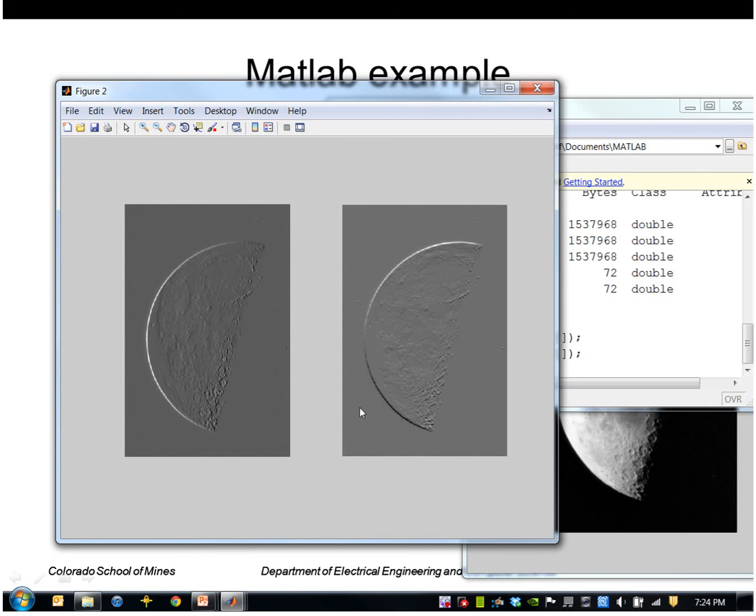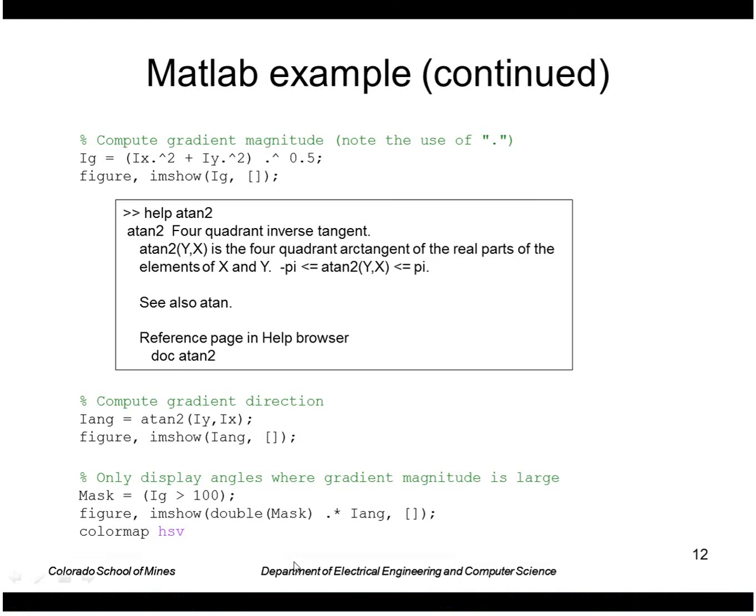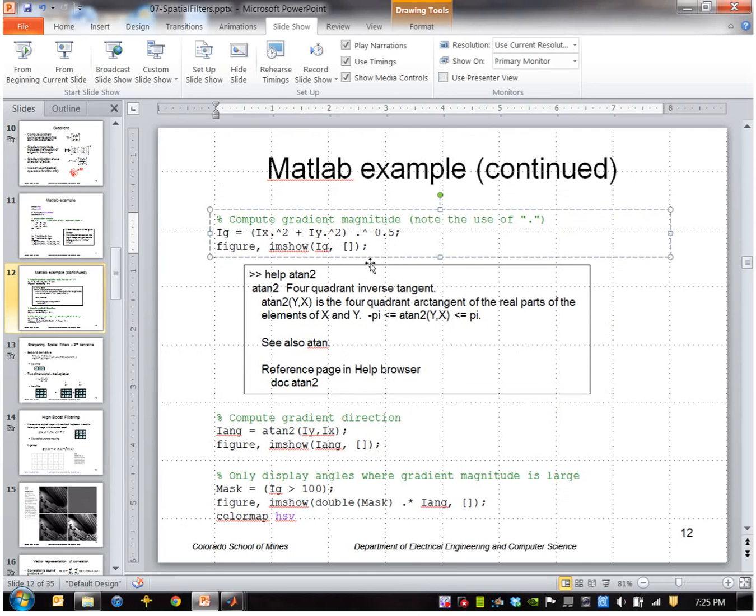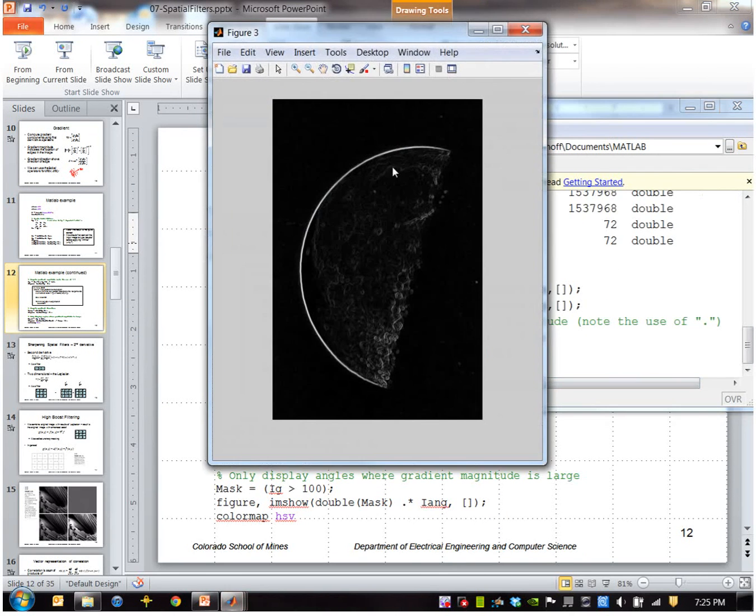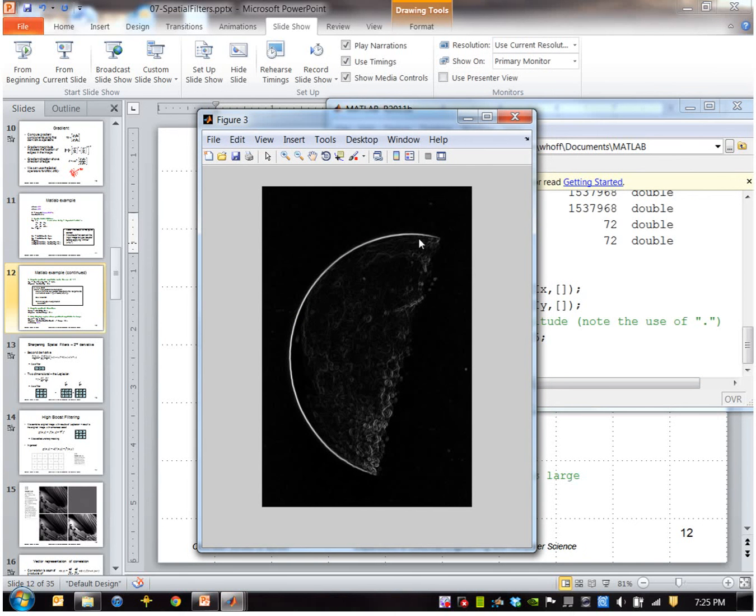The gray value indicates zero. The white values are positive values and the black values are negative values. We can compute the gradient magnitude by taking the sum of squares and the square root. You'll notice I'm using the period here in MATLAB that indicates a point by point operation and not a matrix operation. This is the gradient magnitude so it's strong where I have a strong edge like you might expect.